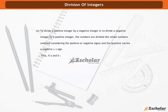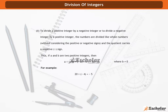Thus, if a and b are two positive integers, then a divided by minus b is equal to minus a divided by b, where b is not equal to 0. For example, 20 divided by minus 4 is equal to minus 5. Minus 36 divided by 9 is equal to minus 4, etc.